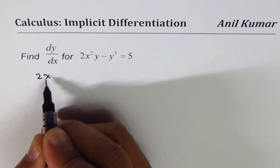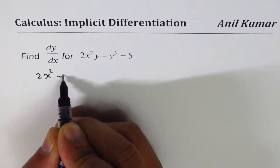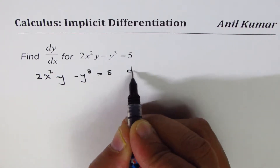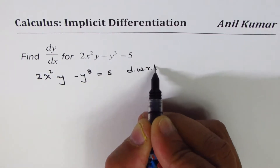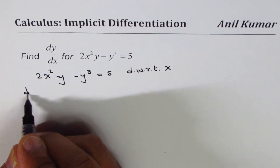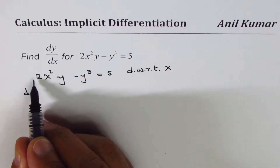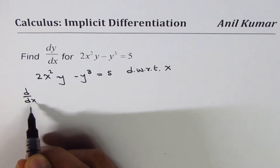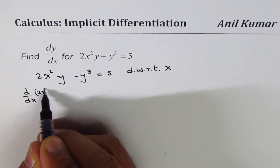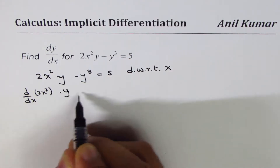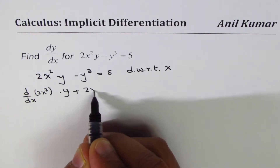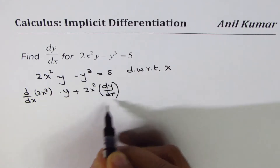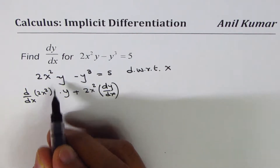The question is 2x squared y minus y cubed equals 5. Let us differentiate with respect to x on both sides. Here we can apply the product rule — we have the derivative of 2x squared times y, plus 2x squared times dy/dx. We have applied the product rule in the first term.